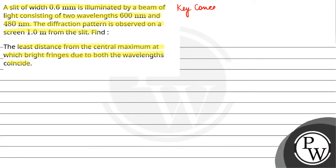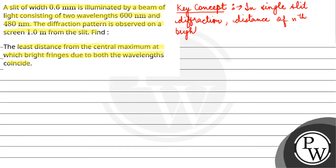We have a key concept: in single slit diffraction, the distance of the nth bright fringe is n lambda D by d.